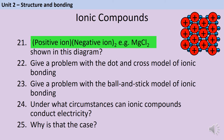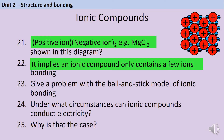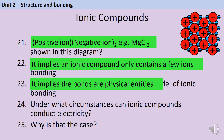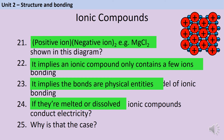The problem with using dot-and-cross models for ionic bonding is that it implies there are only a couple of ions involved, whereas actually a giant ionic lattice involves thousands and thousands of ions. The ball-and-stick model of ionic bonding is problematic because it implies that the bonds are physical entities rather than just the force of attraction between the ions. Ionic compounds can conduct electricity as long as the ions are free to move, which means they either need to be molten or dissolved to make an aqueous solution — because electricity is the flow of charged particles, and if the charged particles aren't free to move, they can't flow.